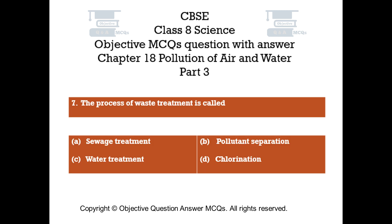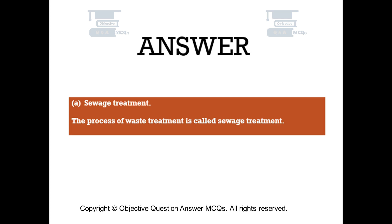Question number 7: The process of waste treatment is called — Option A: sewage treatment, Option B: pollutant separation, Option C: water treatment, Option D: chlorination. The right answer is Option A: sewage treatment. The process of waste treatment is called sewage treatment.